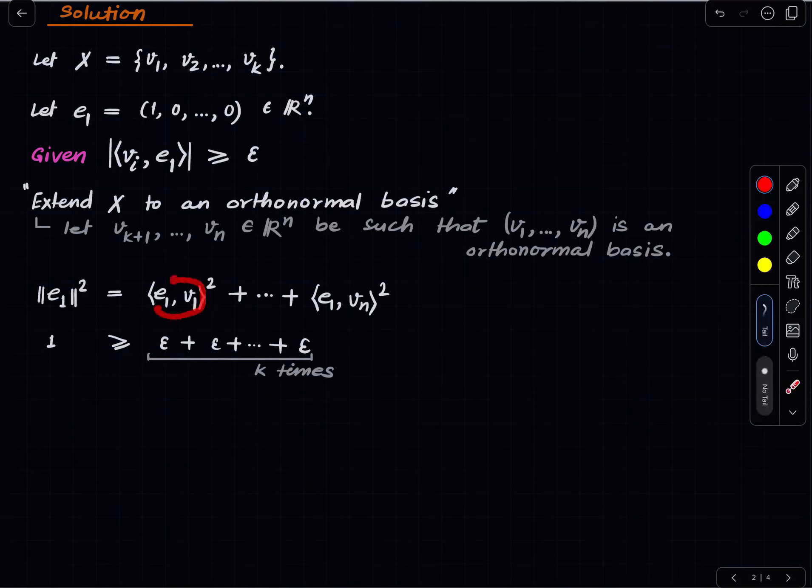Right because this is at least, if, sorry epsilon square I mean. This is at least epsilon square, the second one is at least epsilon square up to k terms. The rest we are happy with greater than equal to 0.